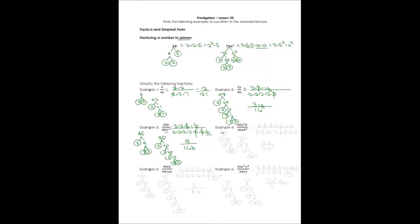Let's take number 4 and factor 60 into primes: 2 times 30, then 2 times 15, then 3 times 5. So 60 factors into 2 times 2 times 3 times 5. For the variables a squared b, that's a times a times b. Now 36: I can factor that into 2 times 18, then 2 times 9, then 3 times 3. So 36 is 2 times 2 times 3 times 3. The variables are a times b times b times b — that's ab cubed.